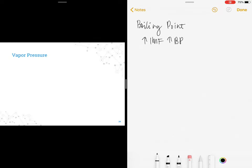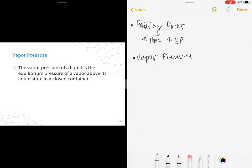Now we go to vapor pressure. The vapor pressure of a liquid is the equilibrium pressure of a vapor above its liquid state in a closed container.